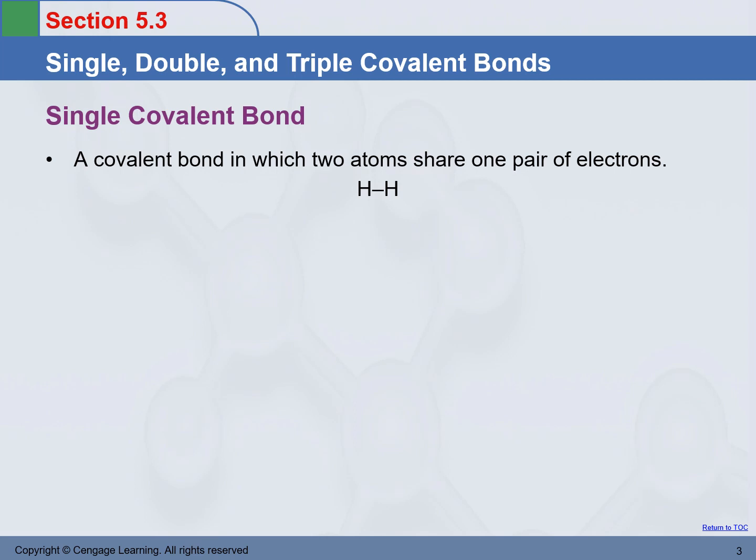In the case of hydrogen molecule, and in the examples we discussed on the Lewis structures of a few molecules on the previous slides, all the examples we saw so far, they always have one pair of electrons shared between two atoms. This kind of chemical bond is called a single bond.